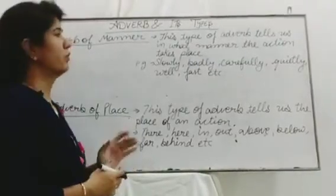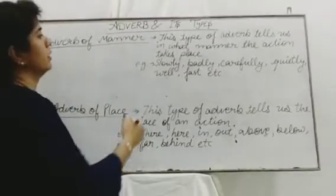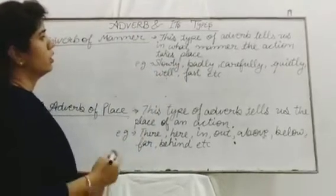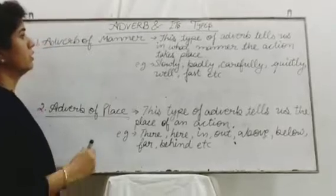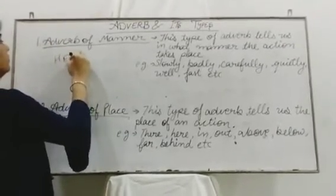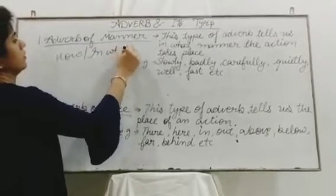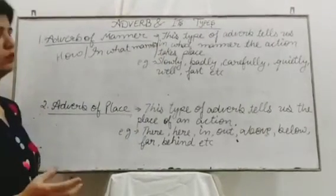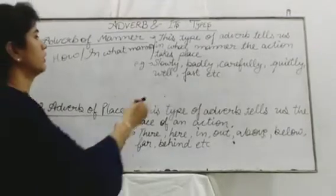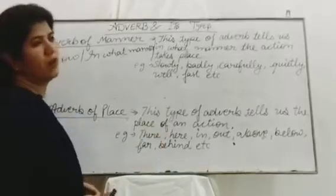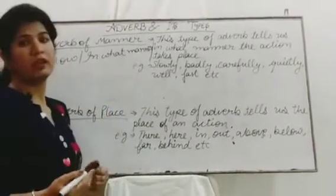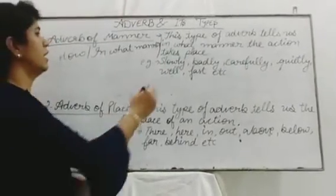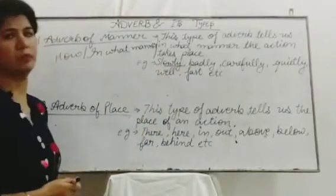The first type is adverb of manner. This type of adverb tells us in what manner the action takes place, or gives the answer to the question 'how?' Examples include: slowly, badly, carefully, quietly, well, fast. More than 80% of adverbs of manner are formed by adding -ly, such as beautifully, carefully, and smartly. The remaining 20% do not use -ly.